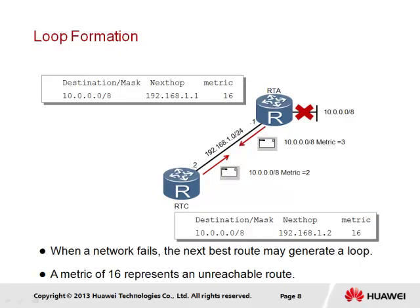We show here an example of the means by which a loop formation is possible. In this example, we have two routers RTA and RTC, and network 10.0.0.0 to which RTA is directly connected. As part of the general operation of RIP, network 10 will initially be advertised to RTC with a metric of 1, allowing RTC to identify the best path to network 10 via RTA.